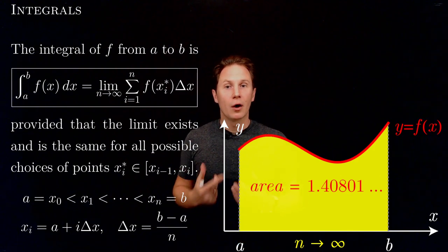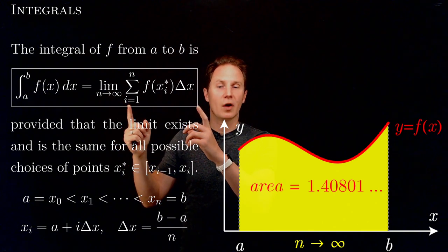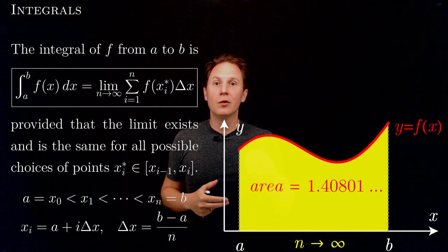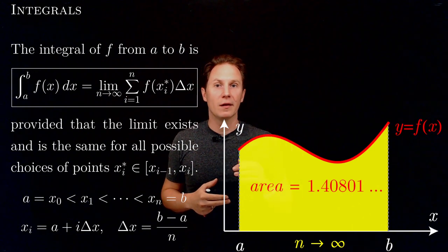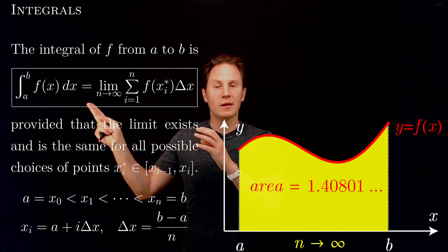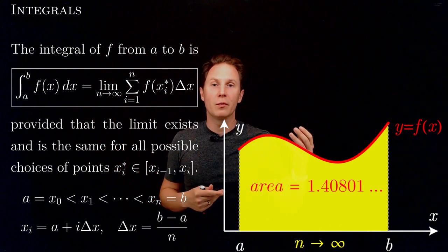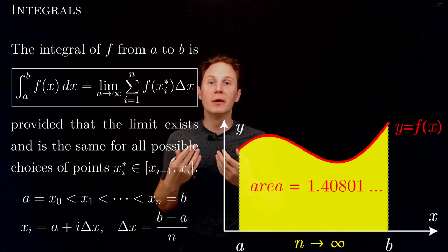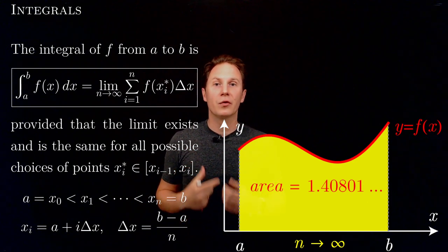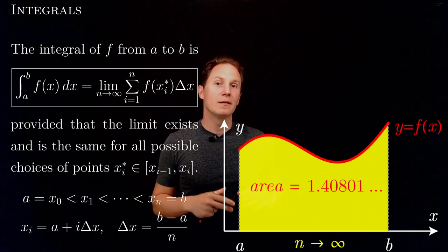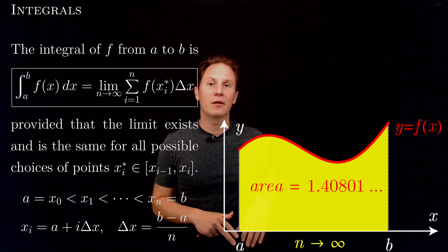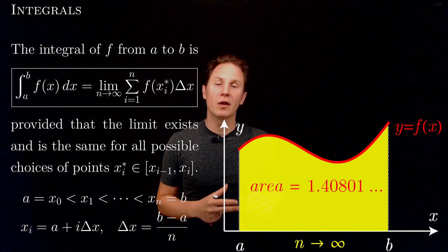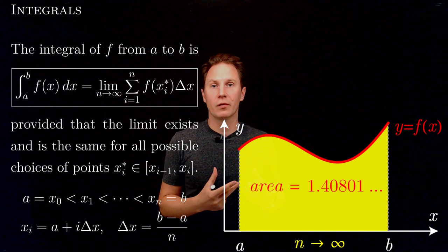Now a word of warning: in the Riemann sum, we have the values of the function f(xi*), and those values need not be positive — they could be 0 or negative. It is entirely possible that the definite integral is not a positive number but can also be 0 or negative. So when we say it is a solution to the area problem, what we really mean is it's the solution to a signed area problem, meaning that regions below the x-axis contribute with a negative sign, whereas regions above the x-axis contribute with a positive sign.